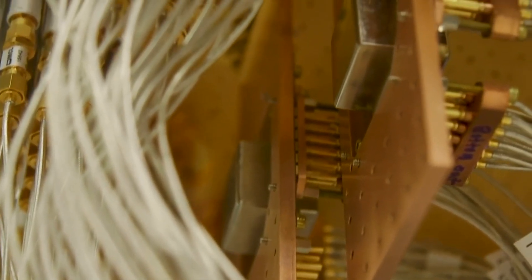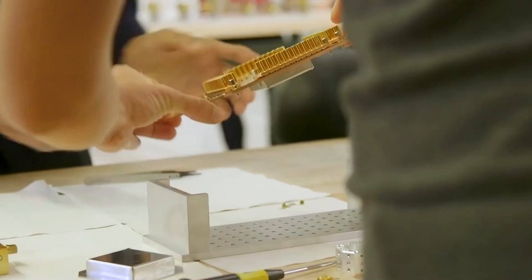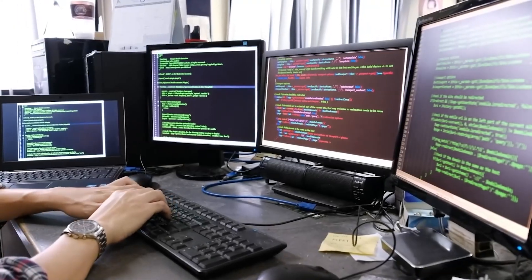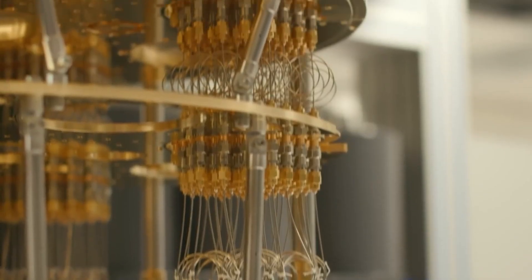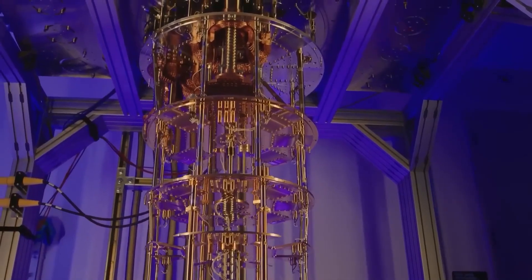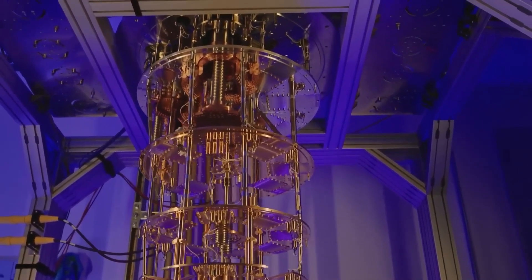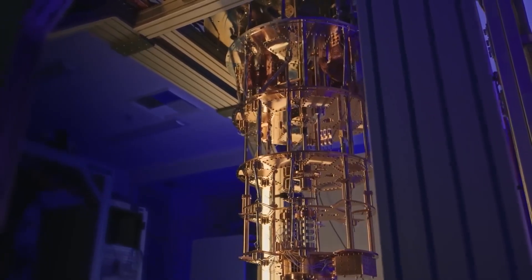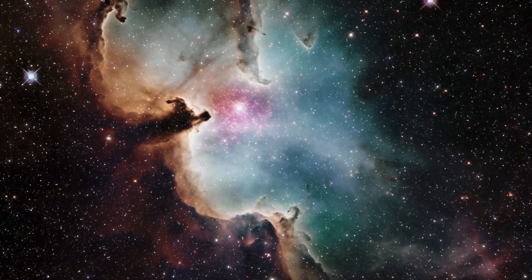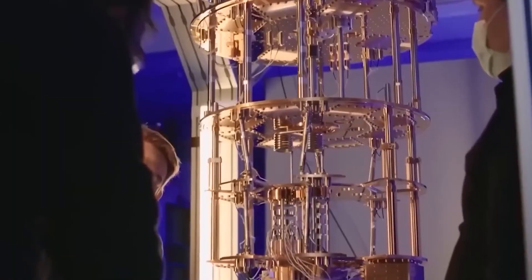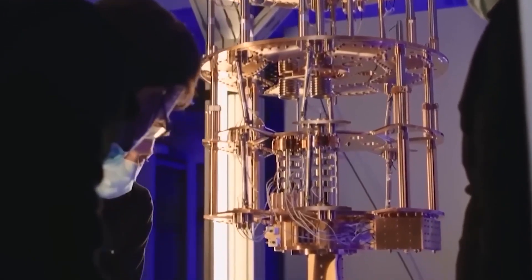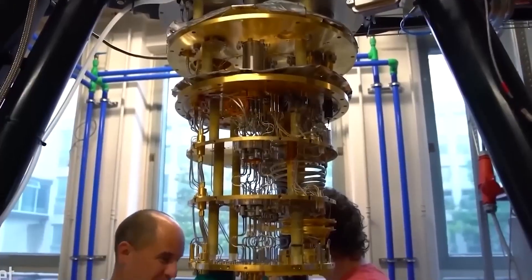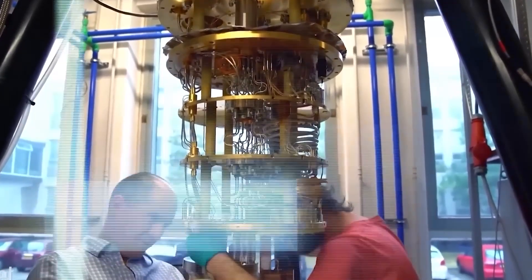While speed matters, the real race to quantum advantage is not just about that. Sycamore didn't use Shor's algorithm yet because it needs more qubits and strong error correction. When quantum computers use Shor's algorithm, it could threaten modern cryptographic systems and possibly change how we understand the universe. Picture using a quantum computer armed with Shor's algorithm to model a black hole's dynamics. It could help create advanced models. But here's the challenge.